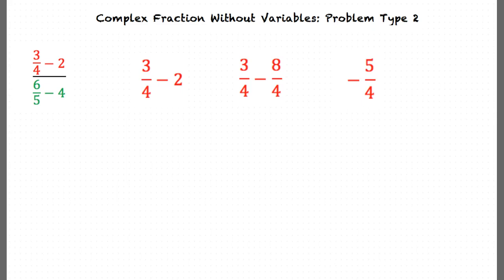Now the denominator, which is 6 over 5 minus 4, must be simplified. Once again, we need to find the common denominator, which will be 5. This gives us 6 over 5 minus 20 over 5. Now we can simplify this to negative 14 over 5.